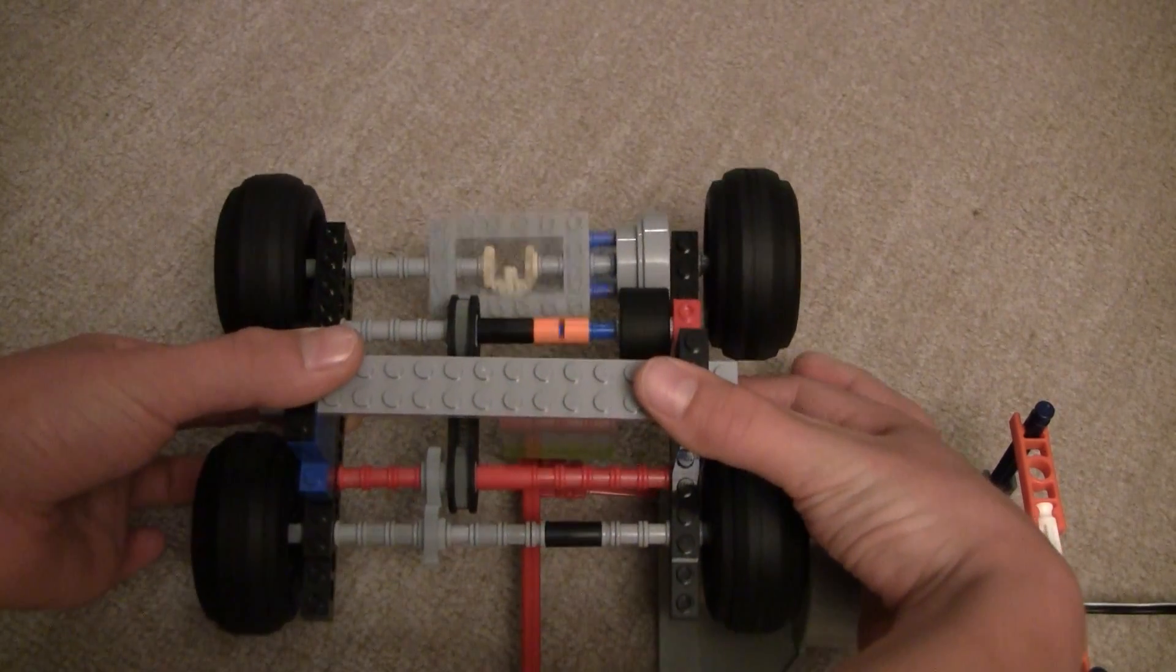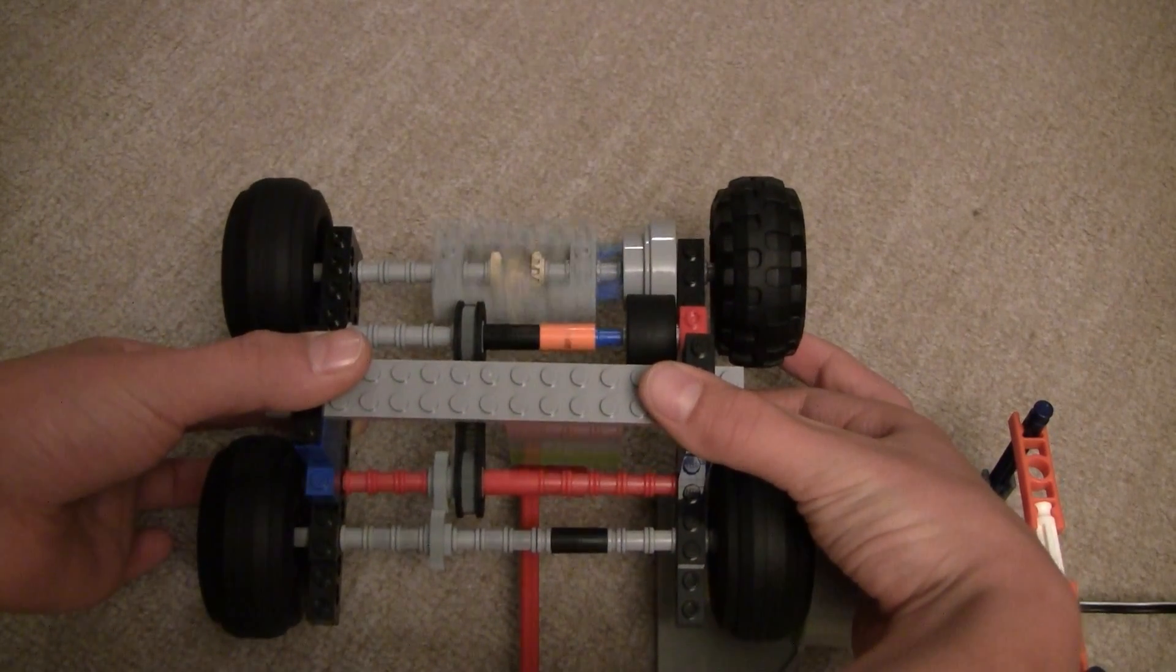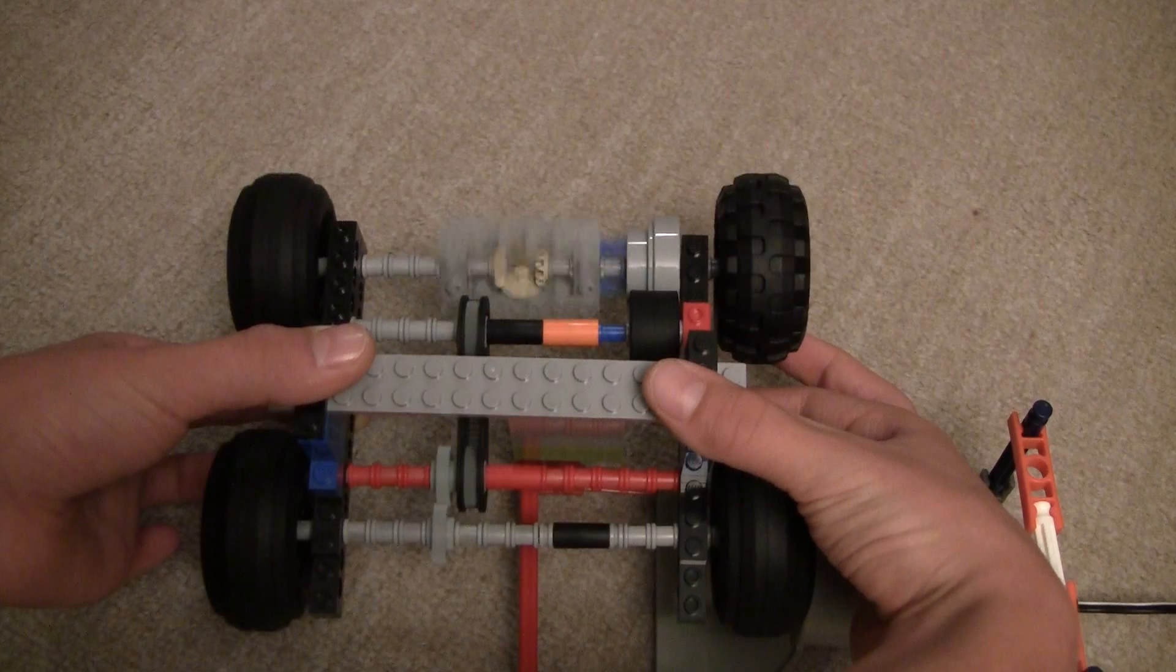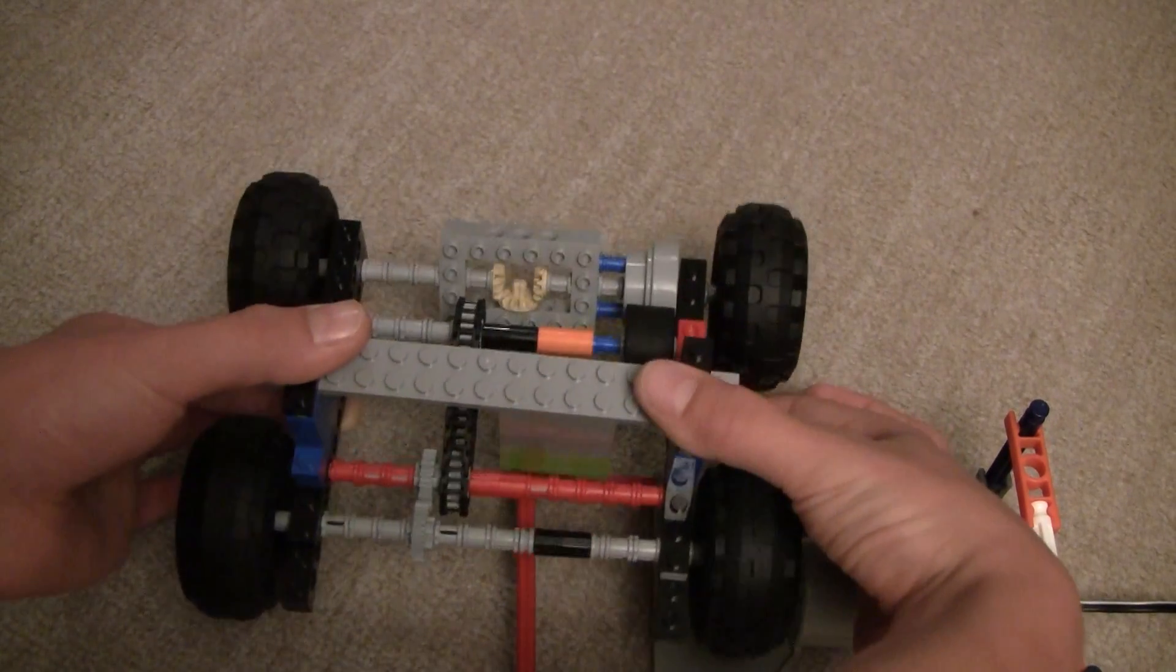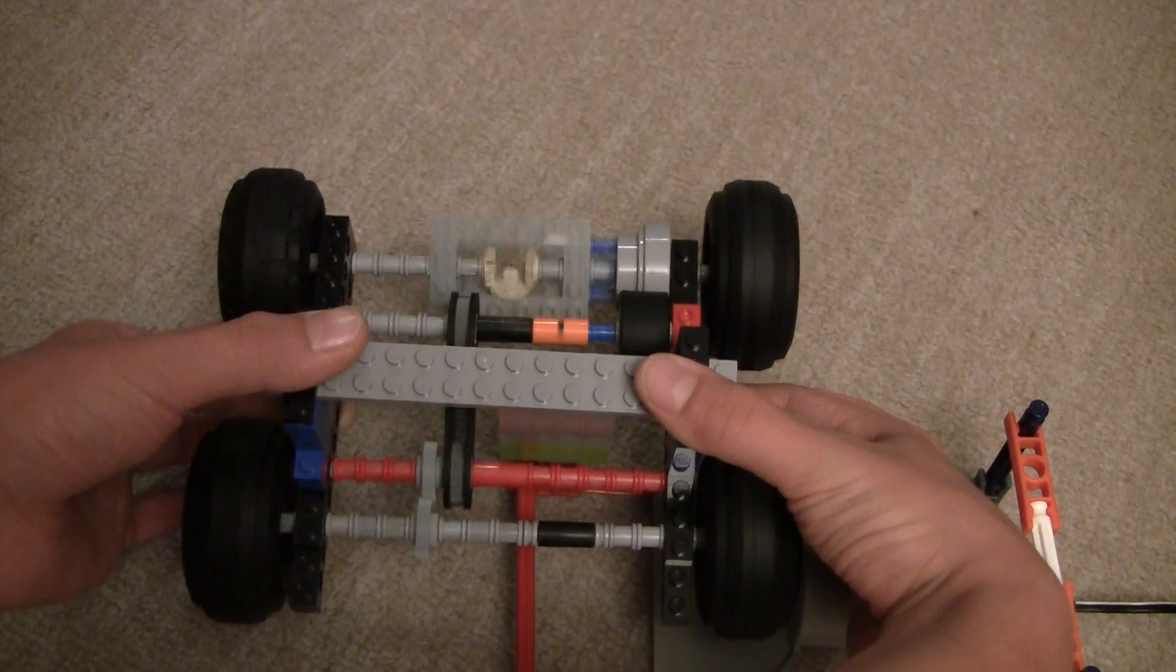And they're both spinning at the same speed right now. If I stop one of them, then the other one goes twice as fast. It's kind of hard to see on camera though because they're already going so fast. That's basically what the differential does.